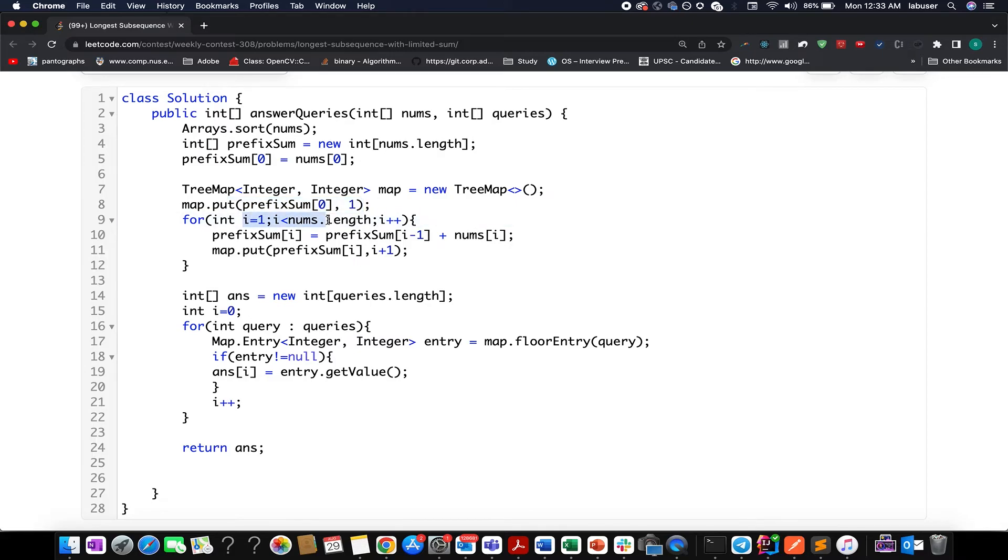Next I've iterated over the input array starting from the first index up till nums dot length, and I've appropriately built my prefix sum array. Along with this I've added entries into my tree map, and whatever prefix sum I've computed I pass in the value as i plus 1. There will be no case of collision because the sum is always in an increasing order.